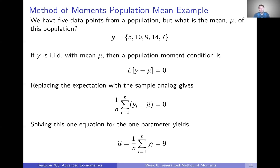Let's suppose that we have no clue what kind of distribution these data were drawn from. We don't know — is it normal, is it exponential, Poisson, log normal, who knows? So we don't want to make a distributional assumption and use maximum likelihood. Instead, we're going to use the definition of a population mean to construct a population moment condition.